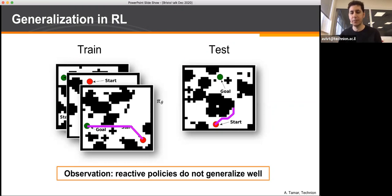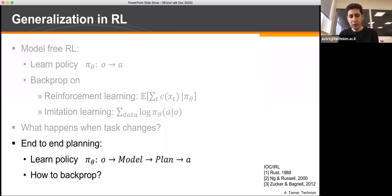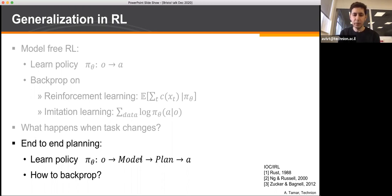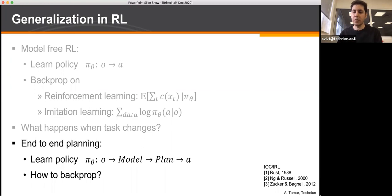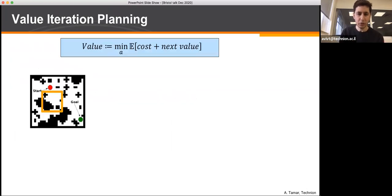To solve this we thought we need a different architecture: going from observation to a model, then planning on that model, then outputting an action. If we had that, when the observation changes the model changes, the plan changes, and we get the correct answer. The question is how to design such a model and train it using backpropagation. We took inspiration from inverse reinforcement learning and came up with a solution based on value iteration.